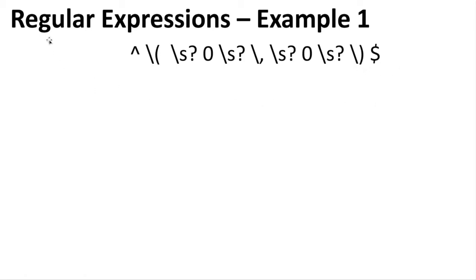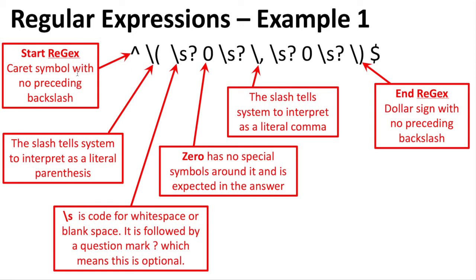That slash is what we call an escape character — it escapes the code and lets you treat it as literal text. So here are the markings for all of the code used for that zero comma zero entry. The slash tells the system to interpret the character as literal text, so the parenthesis becomes a literal parenthesis and not a code element. In regular expressions, parentheses are used to create groups, but here we just want it read as a parenthesis. The \s is code for white space, followed by a question mark because I made it optional.